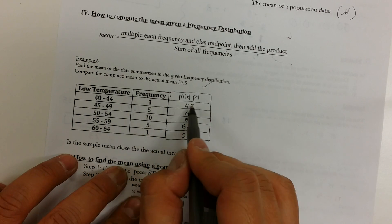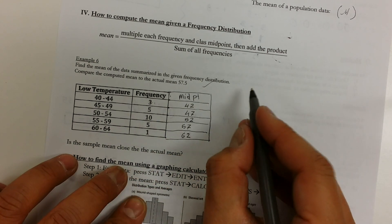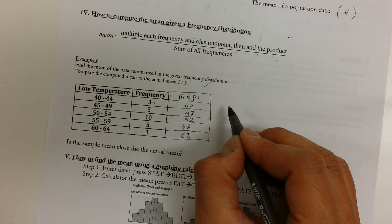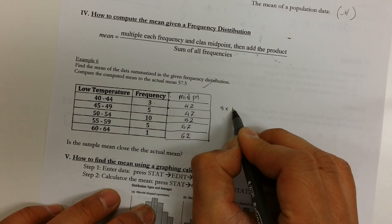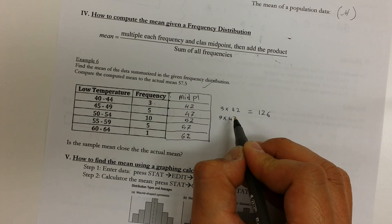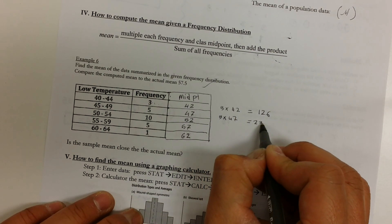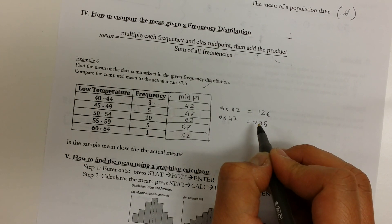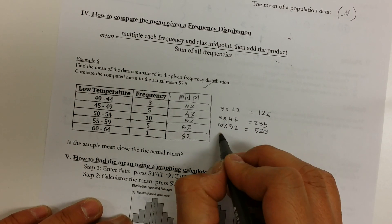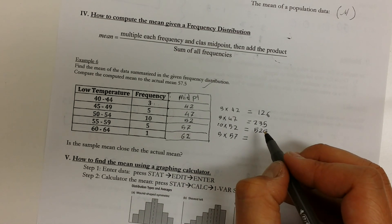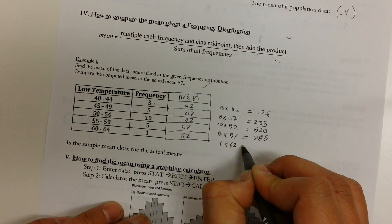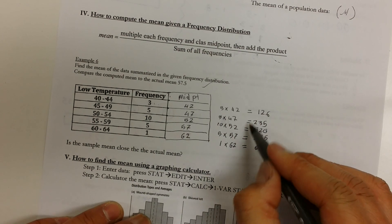I'm going to multiply these together. So if I multiply these together, I get 3 times 42 and 3 times 42, so 3 times 42 equals to 126. 5 times 47 equals to 235. 10 times 52, that equals to 520. 5 times 57, that equals to 285. 1 times 62, which equals to 62.